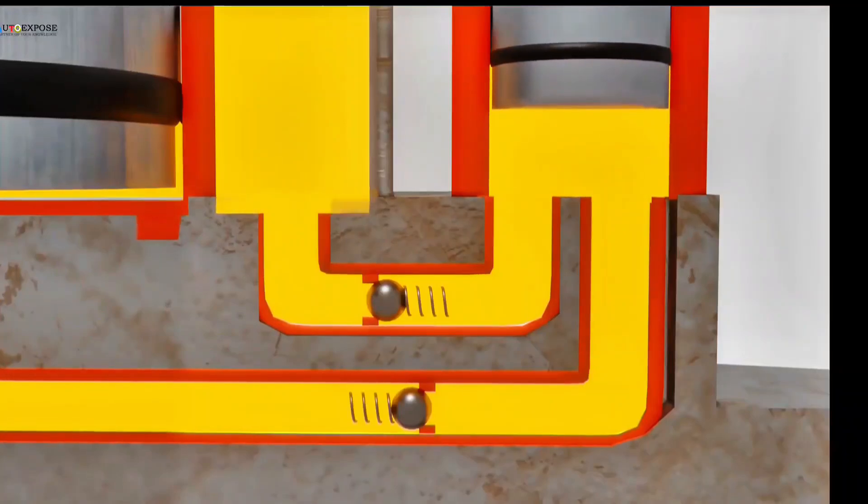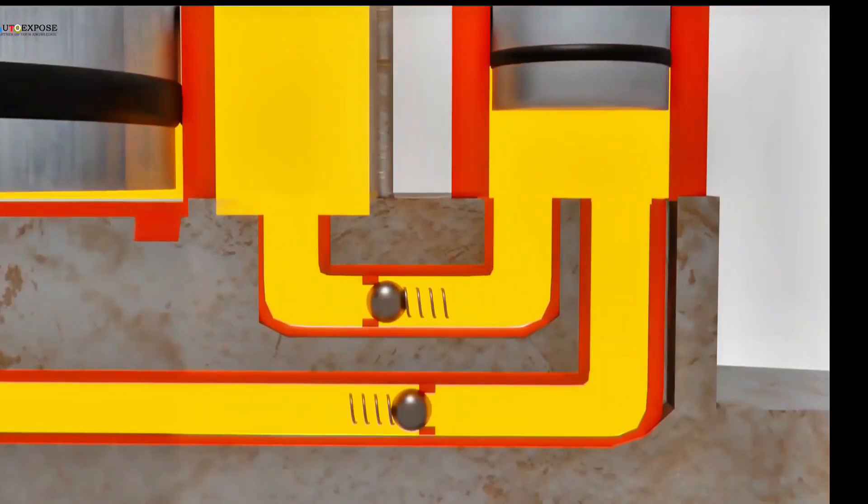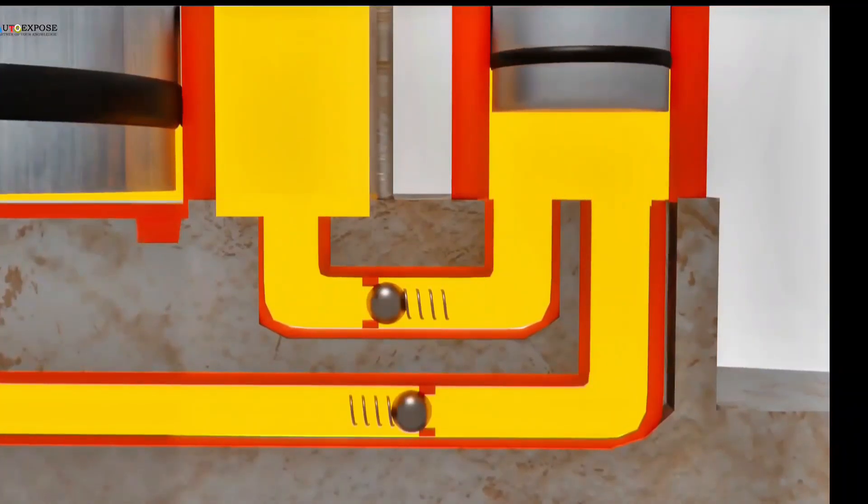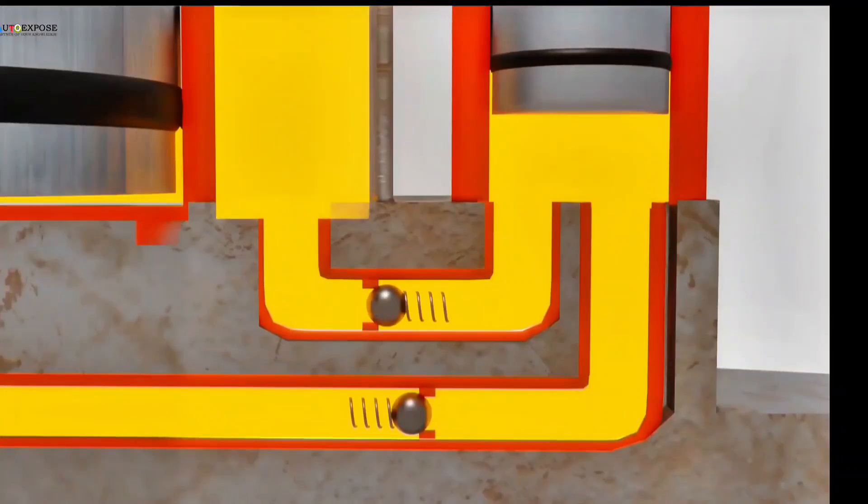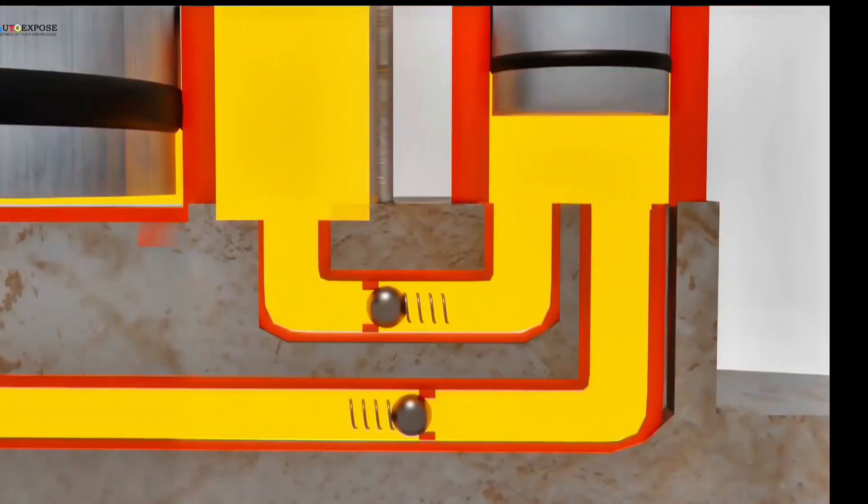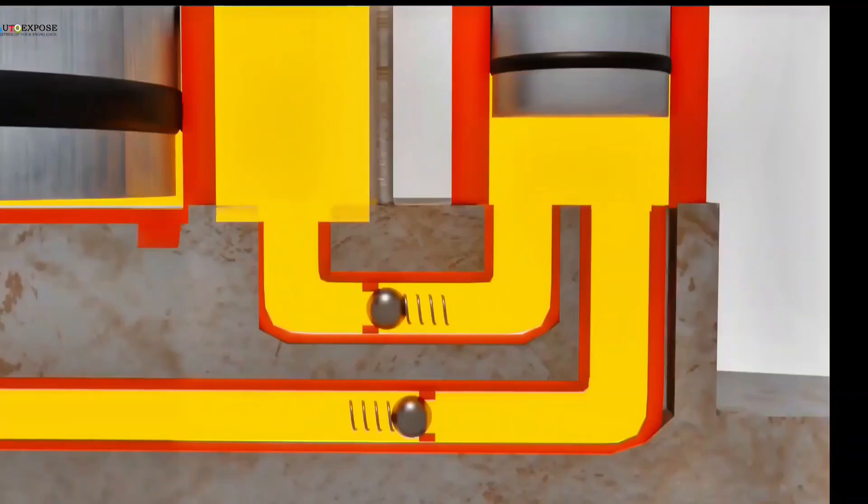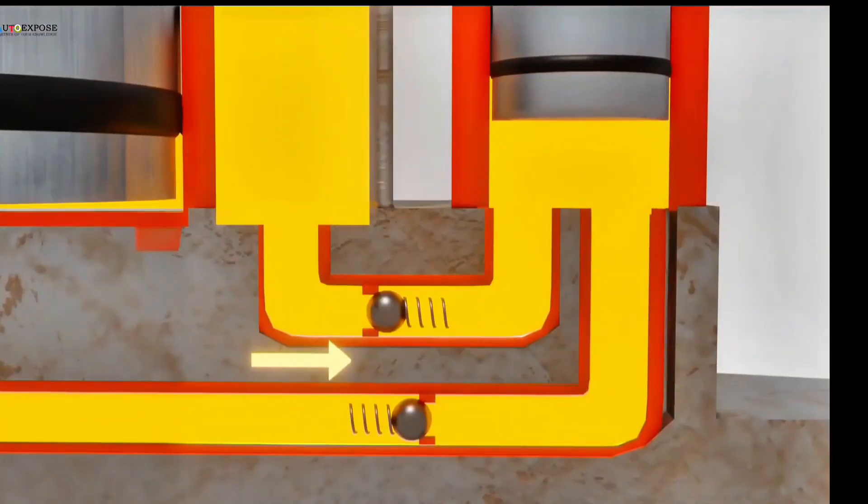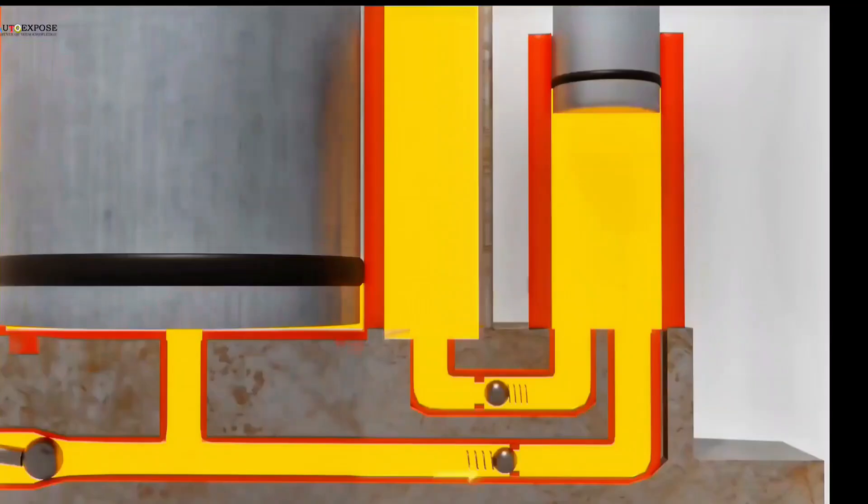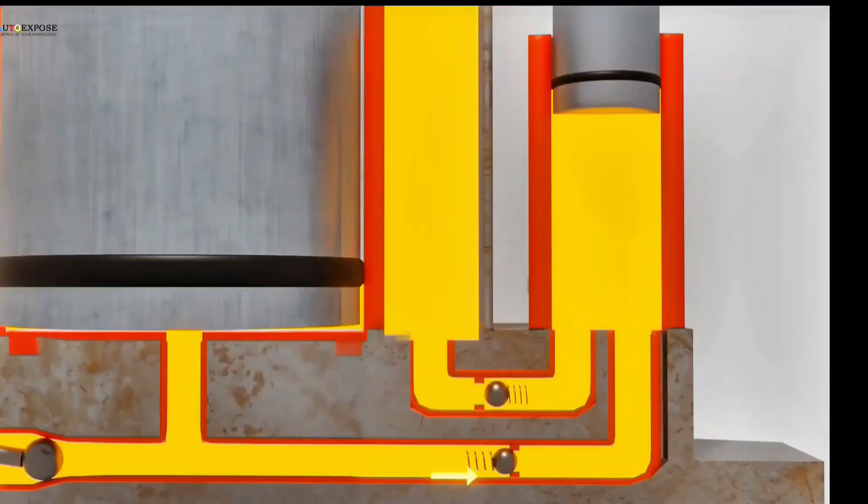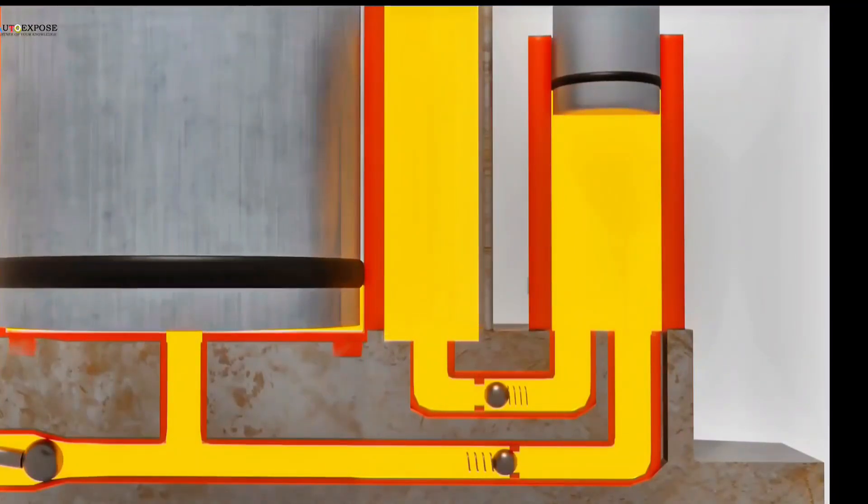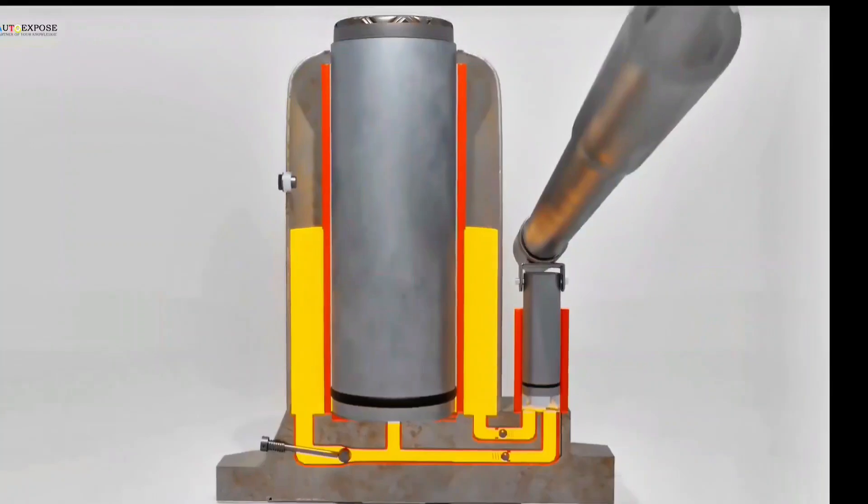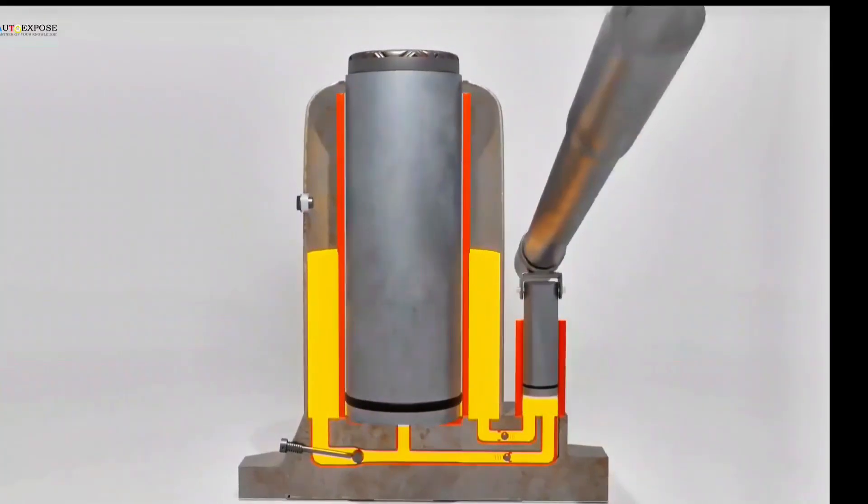When we raise the input piston, it increases the volume in the input cylinder, reducing the pressure. This decrease in pressure creates a suction force that draws fluid from both channels. The reservoir valve opens when sucked in, while the output valve closes when sucked in, preventing fluid from the output cylinder from being drawn in. Only fluid from the reservoir is drawn in.